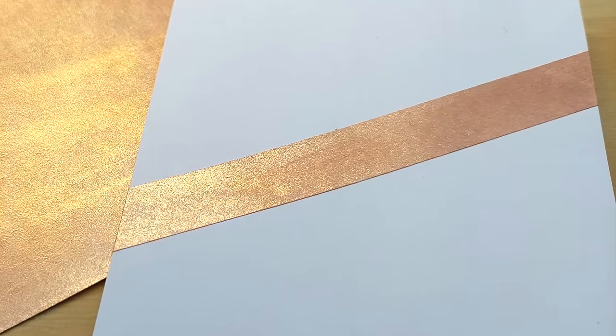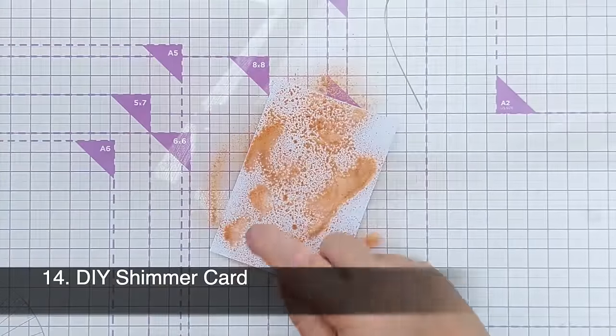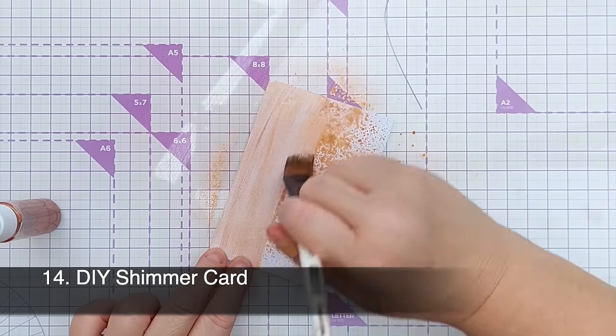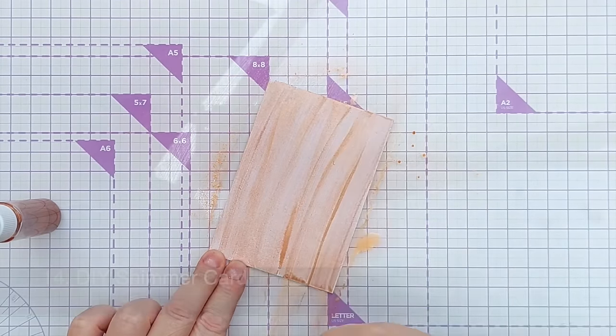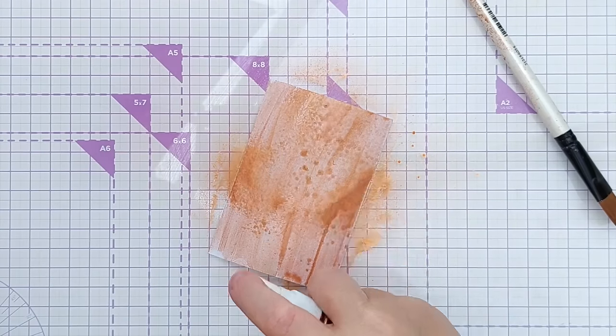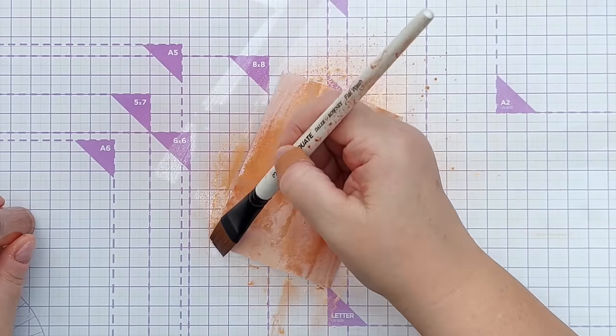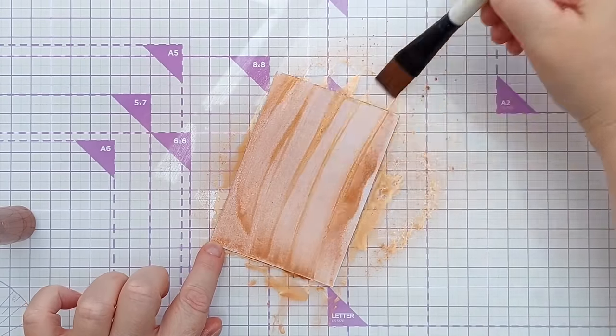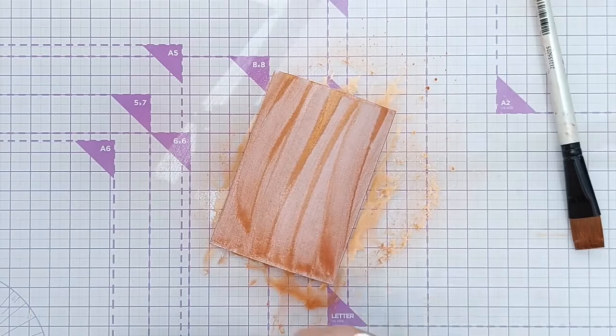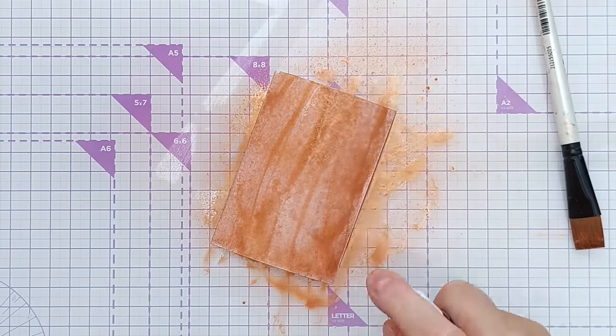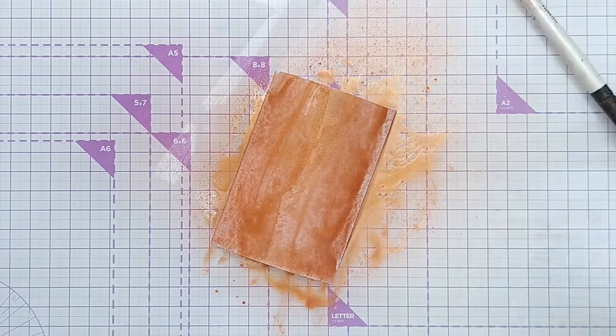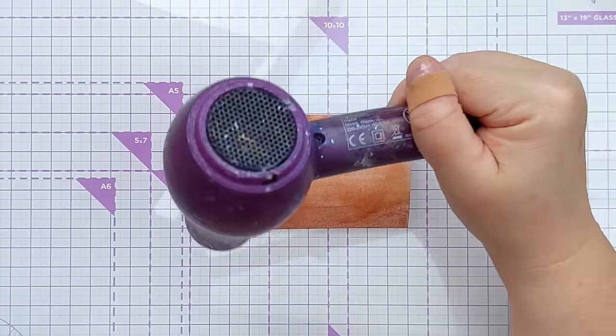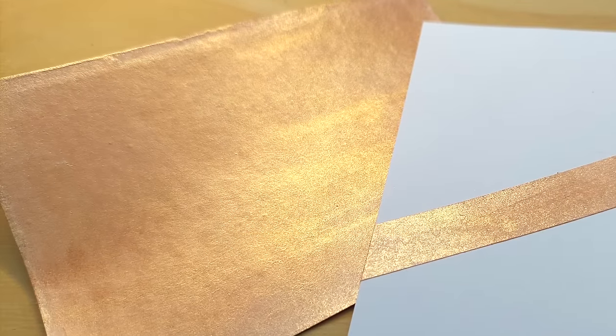In a similar vein, technique number fourteen is to make some DIY shimmer cardstock. So I've got some white cardstock here and I'm brushing on some of my shimmer spray and spraying it on and drying it with my hair dryer. That just gives me a really lovely shimmery cardstock that I can die cut from, and that's what I'm going to do in a minute because when I've shown you all sixteen techniques I'm going to make a card for you as well. So do stick around to the end of the video to watch that.